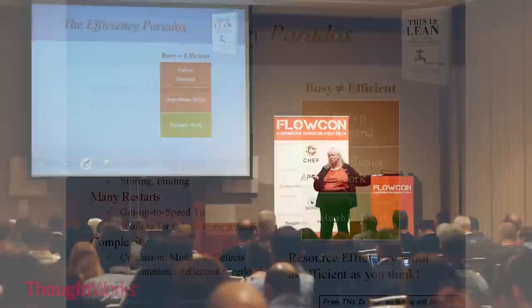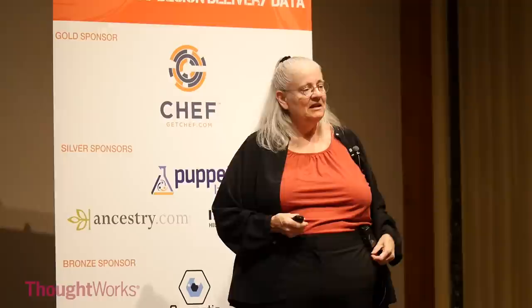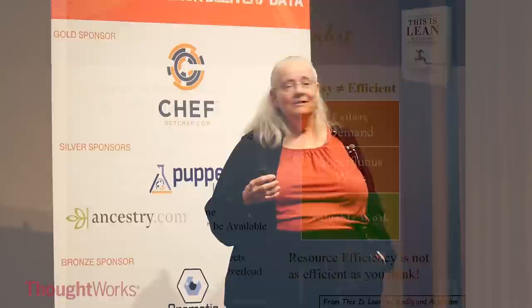Resource efficiency, which most companies focus on, is not anywhere near as efficient as they think. Because when you have long throughputs, stuff happens — windows of opportunity close. If you've got lots of flow units going through your system, you've got handling problems, scheduling problems, storing, finding — we've figured this out in manufacturing, we should know this in software. You have lots of restarts, get-up-to-speed time, waiting for others to be available. I saw scheduling for project teams where the computer scheduled the next project team assuming all projects would be done on time — how dumb is that? And complexity, confusion, mistakes, defects — all that kind of stuff. So when we think resource efficiency is all we want, this is what we get: huge amounts of inefficiency.